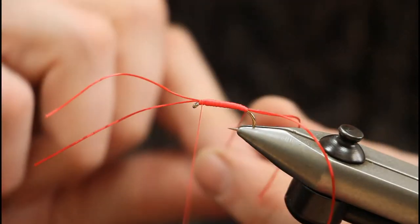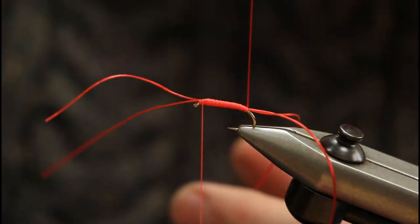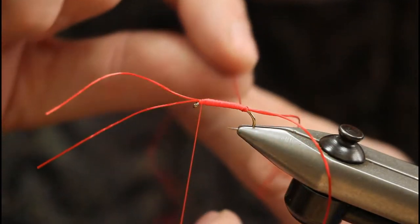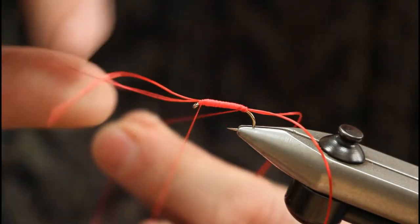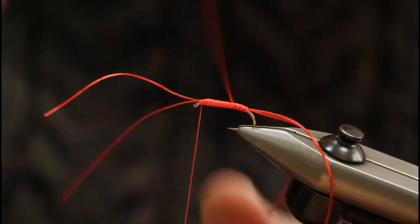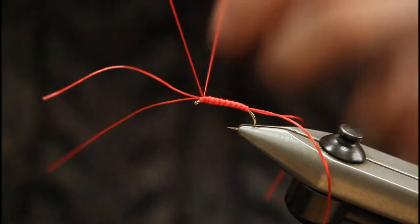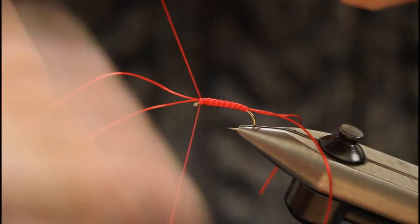When you're happy with your body, just take your other piece of flexi-floss and we just rib up the body in open turns. Catch that off.